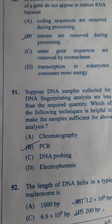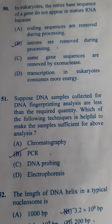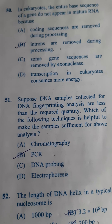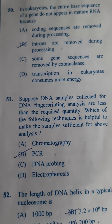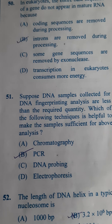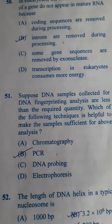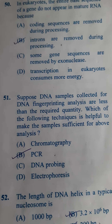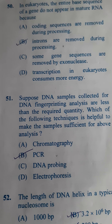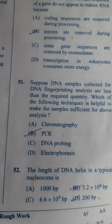Next: DNA samples collected for DNA fingerprinting analysis are less than the required quantity. Which technique is helpful to make the sample sufficient? They want to ask — if you have collected DNA and it is very less in quantity and you want many copies, what do you do? You have to go for amplification using the PCR technique. So the answer for question 51 is PCR.